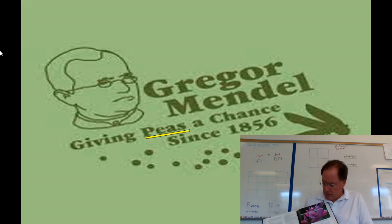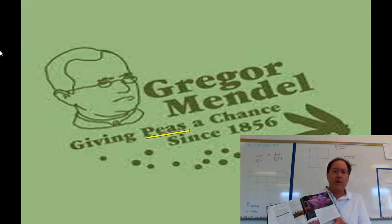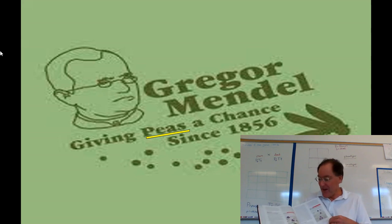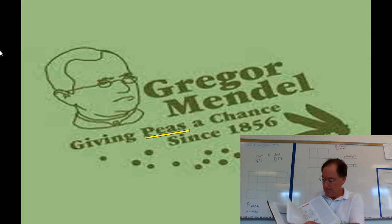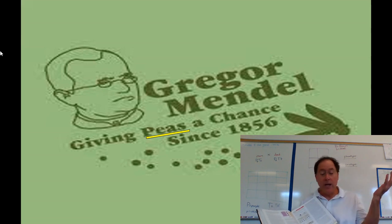Today we're just going to go over 14.1. You can't get away from Mendel when you do this. Mendel was the guy that figured out all this and he created a law — not a theory, a law. There's background information here on his experimentation and his hypotheses. He came up with four hypotheses, and we know now today that he was totally right.